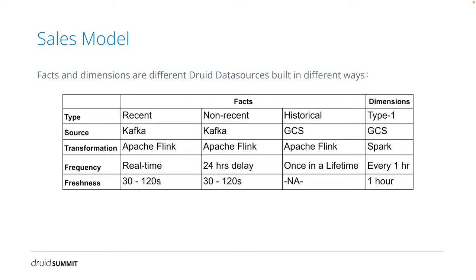Let's take a closer look at the data sources. Facts and dimensions are different types of data, so these differences require us to build them in different ways. Facts are immutable and near-real-time data. The freshness of all facts is usually under minutes. We build all the facts in Apache Flink. There are different types of facts, including recent data — which is append-only real-time data — non-recent data that includes later arriving data, and historical data that is backfilled data for all history. We build all the type 1 dimensions in Spark, and the dimensions build job and load job run every one hour.